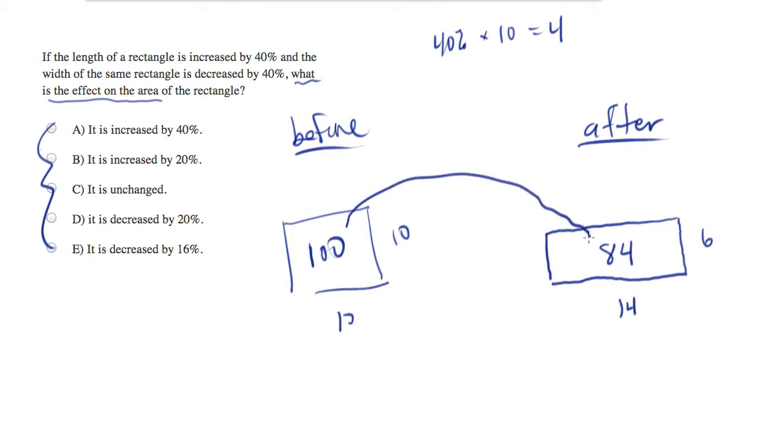So we went from 100 to 84. And what has happened? Well, we've subtracted 16. We've had a decrease of 16. I can already tell that the answer is going to be E. I started with 100 on purpose so that it would be easy to see.